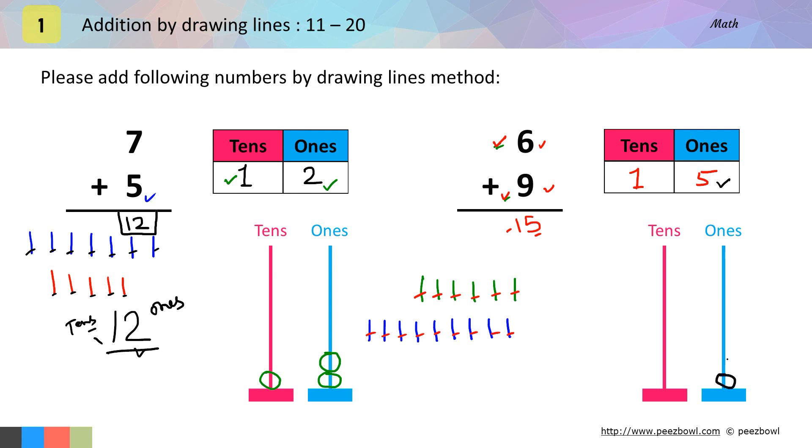Here I will draw 5 circles on the ones line. Here we have 1, 2, 3, 4 and 5 circles on the ones line and 1 circle on the tens line. I draw 1 circle on the tens line. Ok.